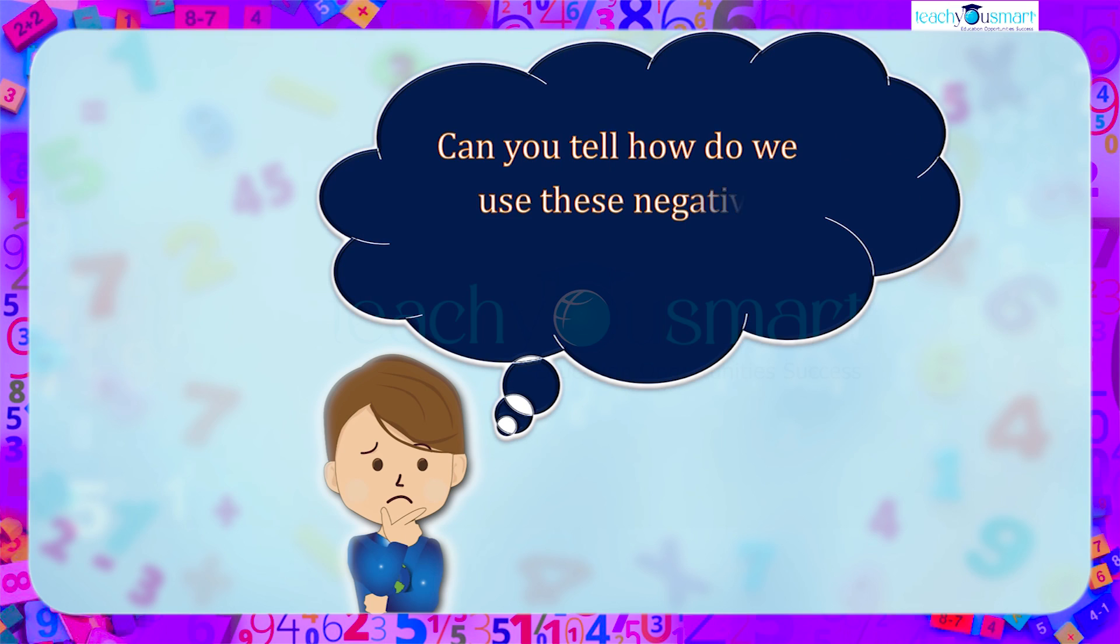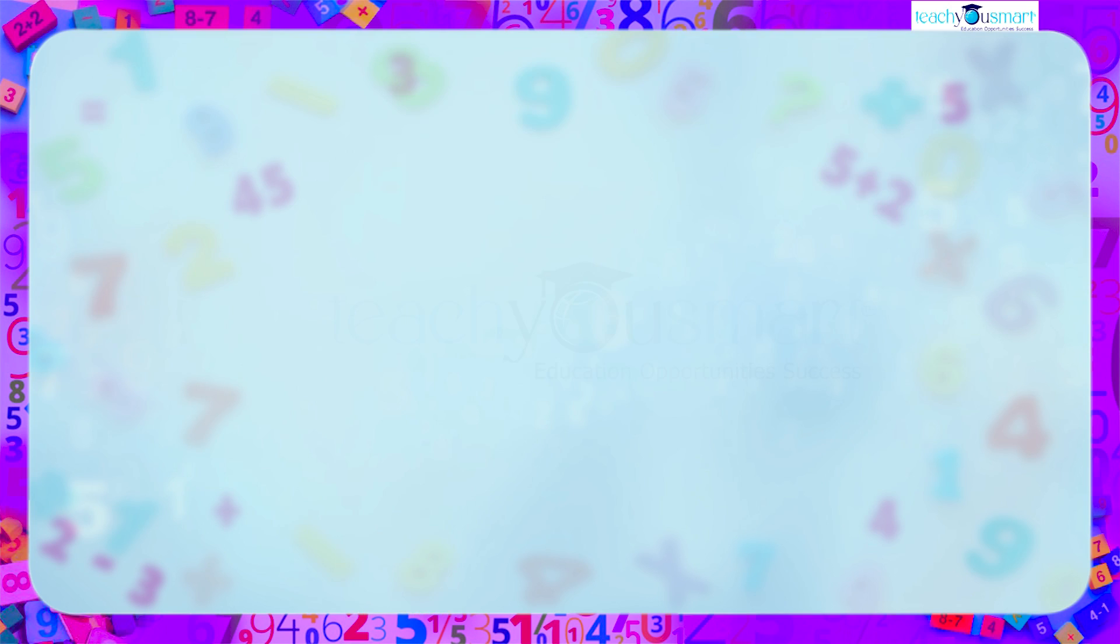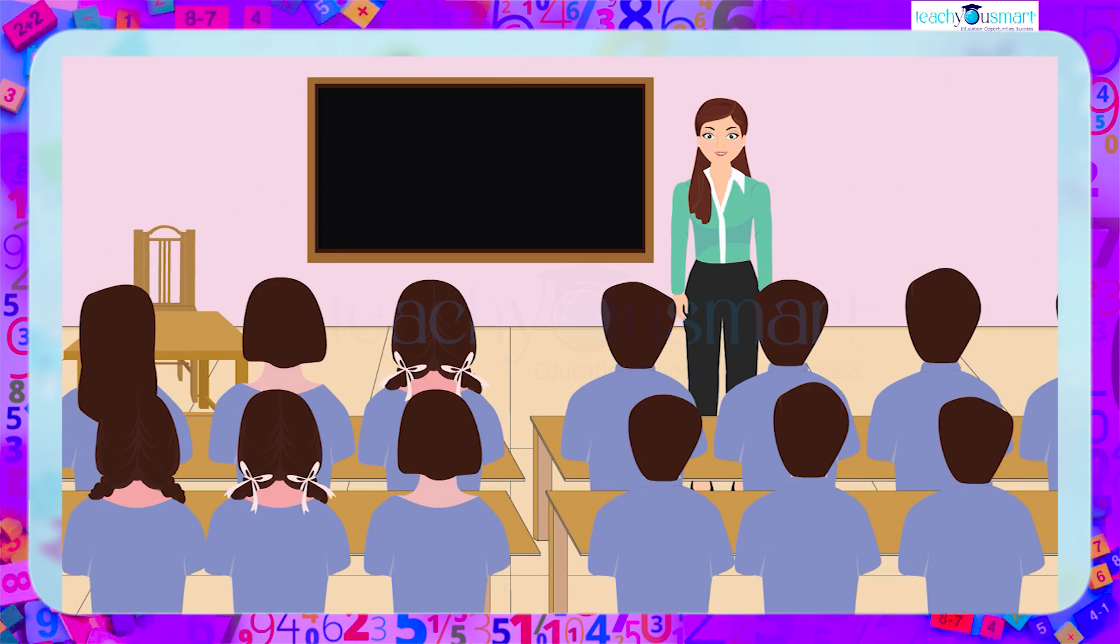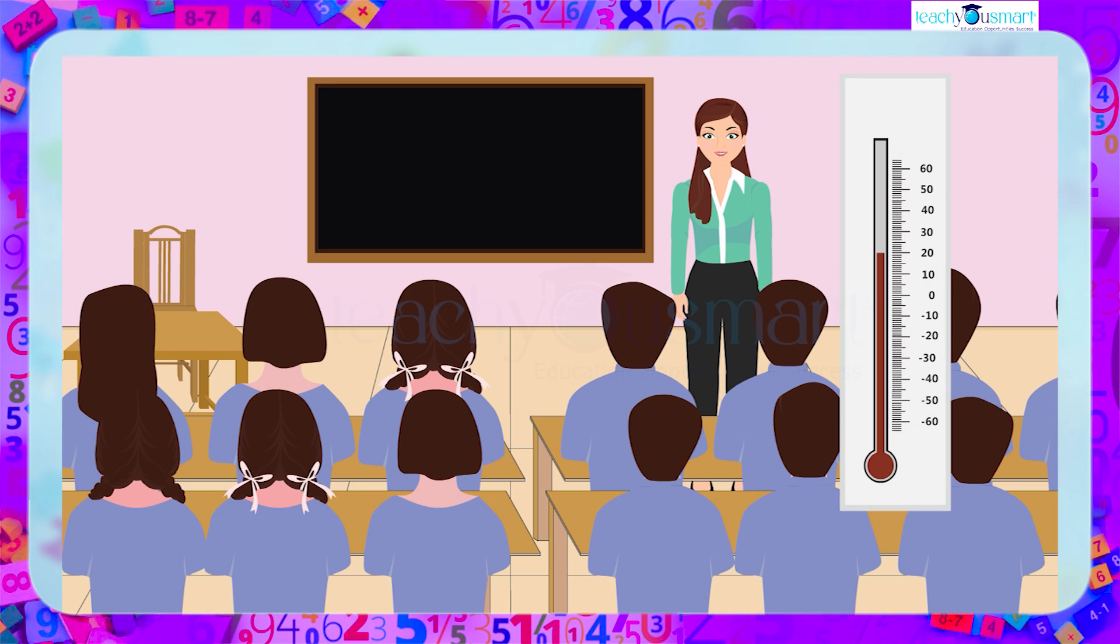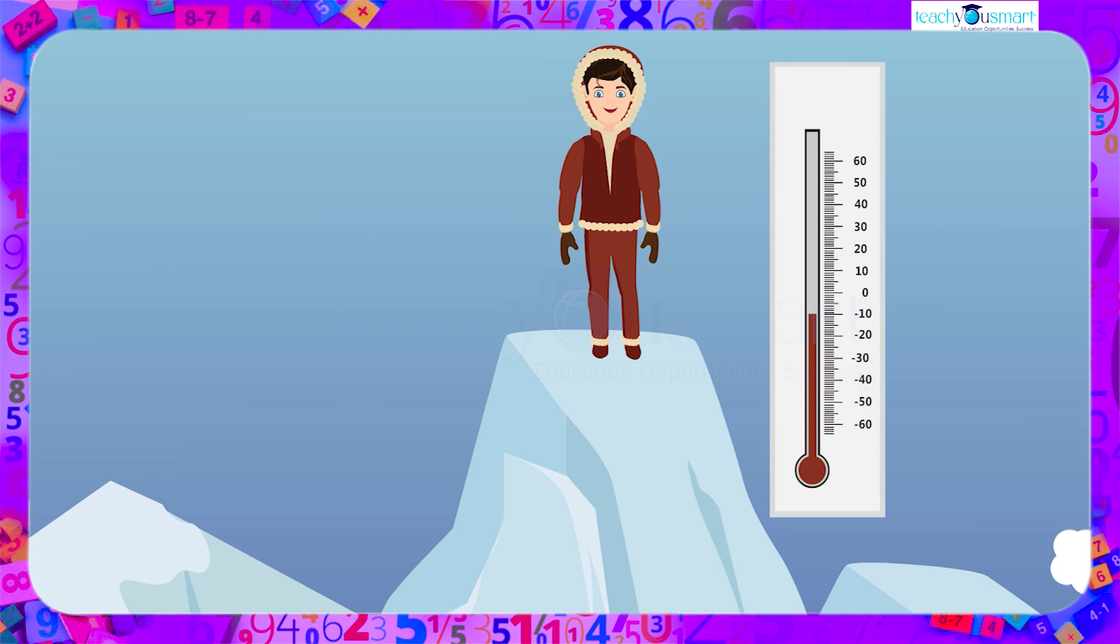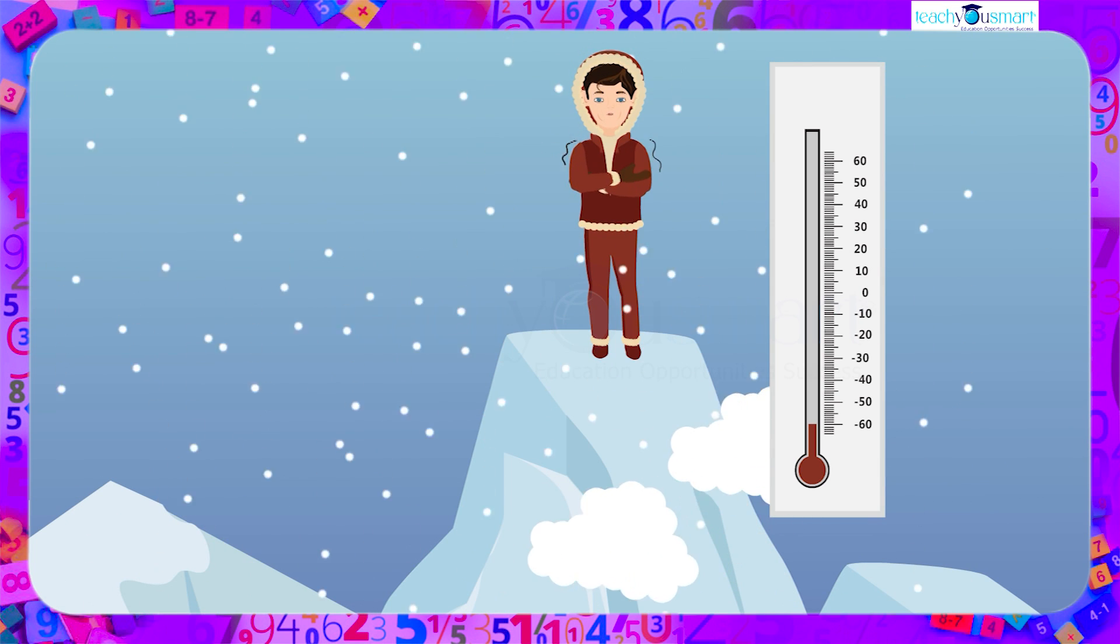Can you tell how do we use these negative numbers in our real life? Let's look at a couple of real life examples. What is the room temperature in the classroom? It's 20 degrees Celsius. What if you climb to the top of Mount Everest? We all know that it is freezing cold on top of Mount Everest. The temperature on the top of Mount Everest ranges from minus 10 degrees Celsius to minus 60 degrees Celsius.